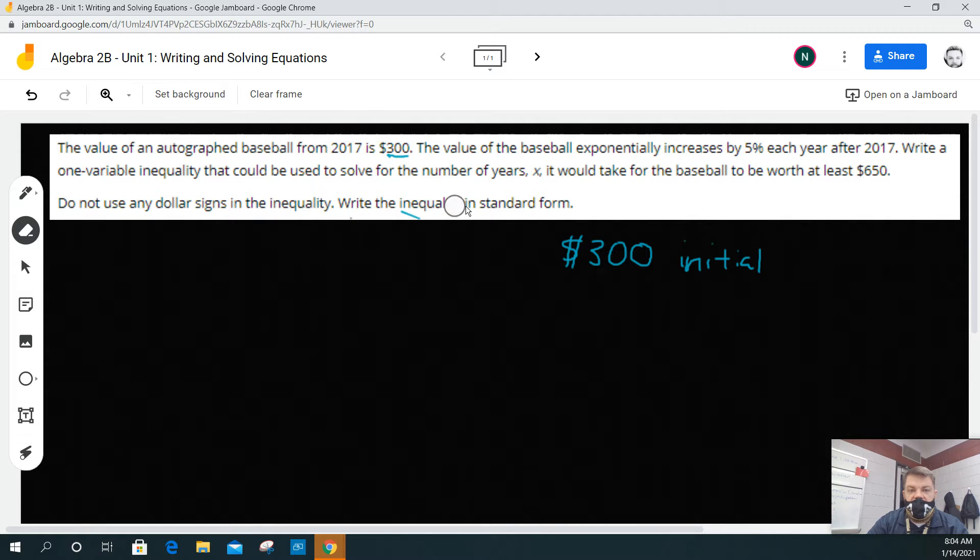Then the next thing that we need to recognize is the value of the baseball exponentially increases by 5%. That's important. So let's think about that. 5% is our rate, and it's an increase, so it has to be a positive rate.